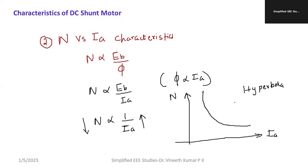You can also mark a safe speed limit on the graph. This type of characteristic is known as N versus IA characteristics.